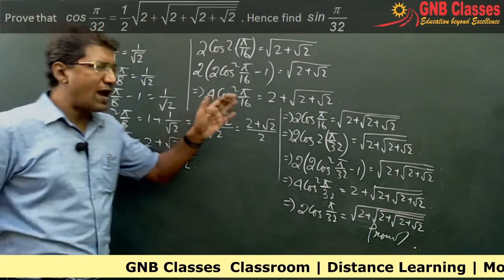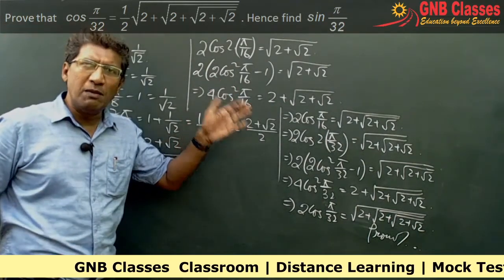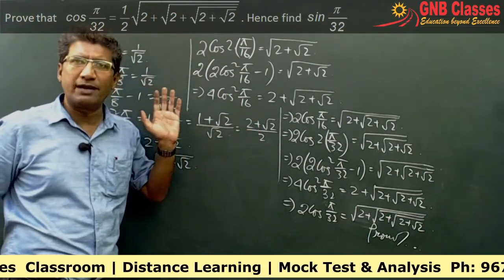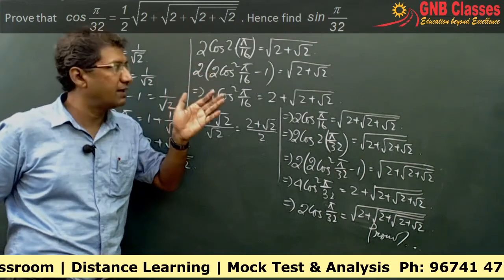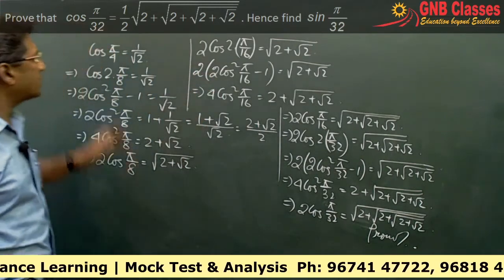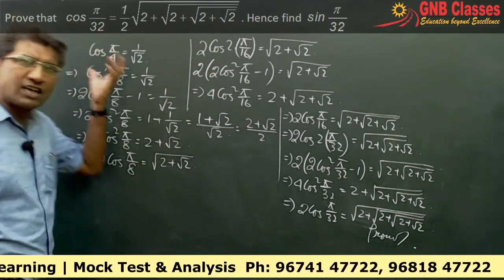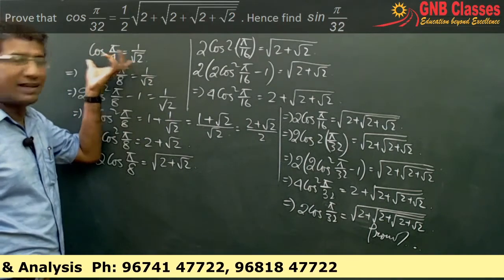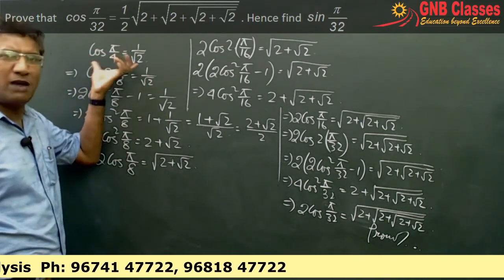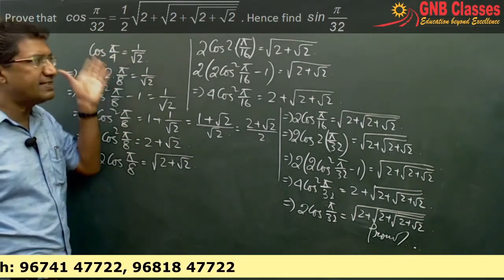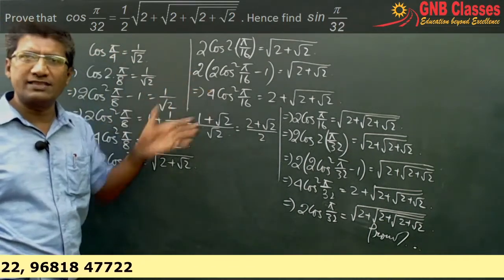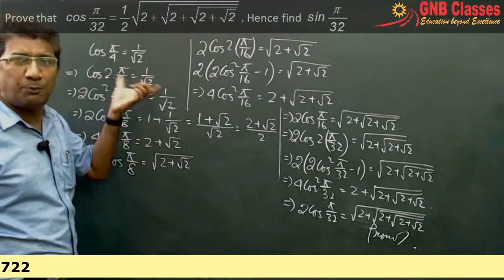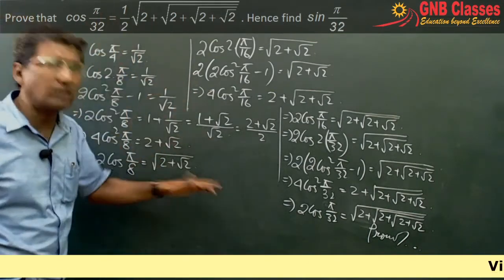Try to remember this sum. Don't memorize it completely, but remember that we started from cos(π/4). This is the approach for doing this type of problem — remember the approach, not the sum.